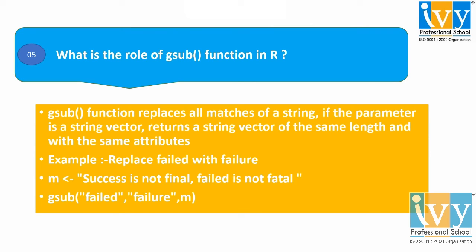We can also say that the gsub function in R is used for replacement operations. The function takes the input and substitutes it against the specified values. The gsub function always deals with regular expressions. For example, replacing 'failed' with 'failure'.